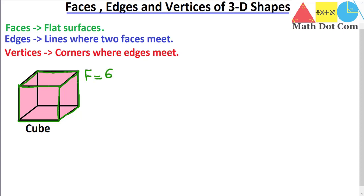Next are the edges. Edges represent the lines where two faces meet. If I mark those lines, we can count them: one, two, three, four, five, six, seven, eight, nine, ten, eleven, twelve. It means there are 12 edges in the cube. So we have 12 edges.